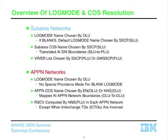In APPN networks it works a little differently. The log mode name is always chosen by the originating LU. Remember, when APPN was first invented, every session was LU6.2 and every session was PLU-initiated, so the log mode name was always chosen by the OLU, which equaled the PLU. No special provisions were made for blank log mode names. The APPN class of service can also be chosen at the PLU side of the network since the COS was always known by then — chosen by the OLU, PLU, or network node server, which can choose it if the end node doesn't. APPN COS names can be mapped at APPN network boundaries, similar to how it's translated at SNI boundaries. The route is always computed by the PLU side of the network — comparable to the virtual route being picked in subarea. There are some exceptions when interchange TGs are involved.